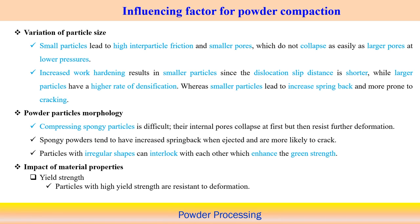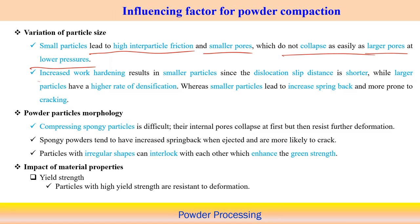What are the influencing factors for powder compaction? One is variation of particle size. Small particles lead to high inter-particle friction and are associated with small pores which do not collapse as easily as larger pores. Increased work hardening results in smaller particles since the dislocation slip distance is shorter — the dislocation must move a shorter distance.